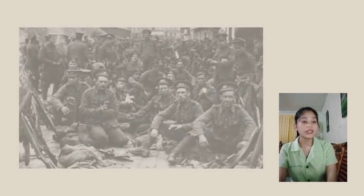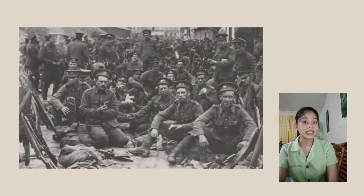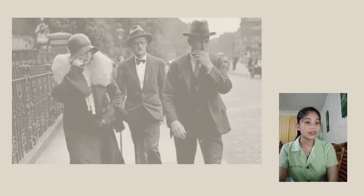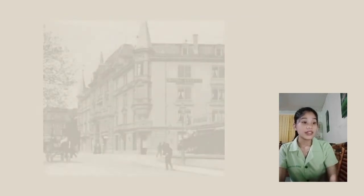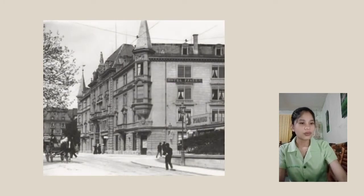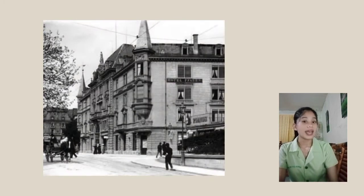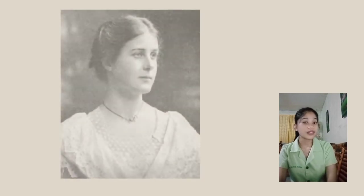He began writing Ulysses in 1914, and when World War I broke out, he moved his family to Zurich, Switzerland, where he continued work on the novel. In Zurich, Joyce's fortunes finally improved as his talent attracted several wealthy patrons, including Harriet Shaw Weaver. Let's have a little background about the novel Ulysses.